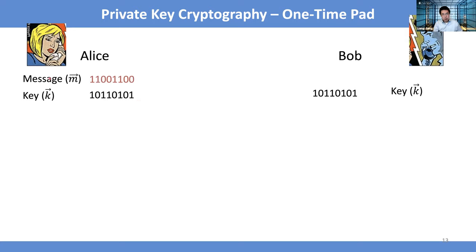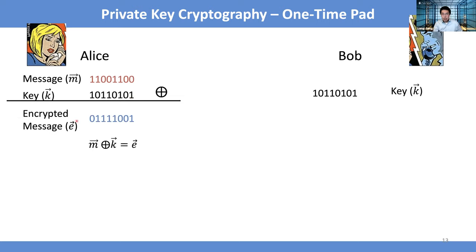This will be perfect for secret communication. For example, Alice wants to send message 1100110 to Bob. She performs an XOR between the message and the key — a bitwise binary sum — which gives an encrypted message: 0111001. Because the secret key is completely random, the encrypted message is completely random, there's no pattern, and nobody can figure it out unless they have the key. Alice can safely publicly announce the encrypted message.